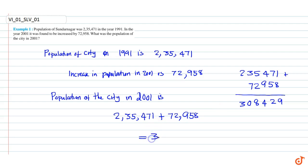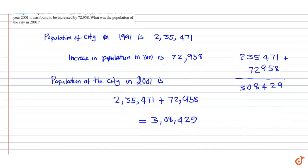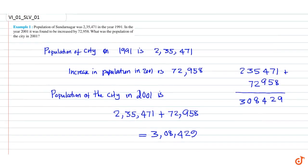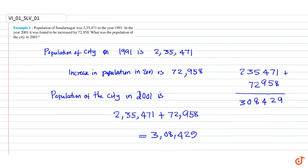This is equal to 3,08,429. This is the population of the city in 2001. This is our answer.